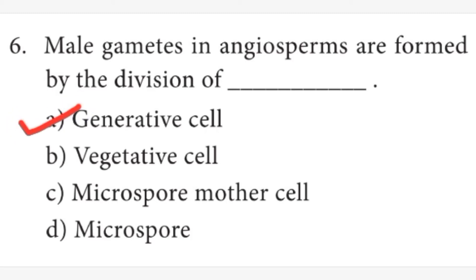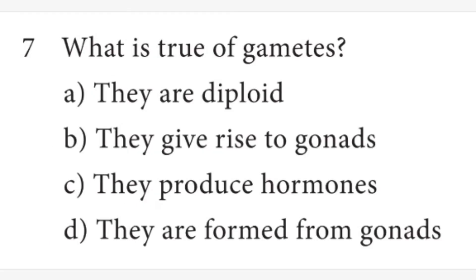In angiosperms, male gametes are formed by the division of the generative cell. Seventh question: what is true of gametes? Answer is D option, they are formed from gonads. That is, gametes are produced from gonads.